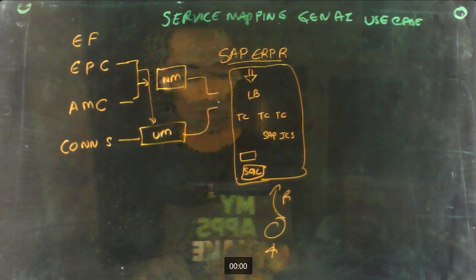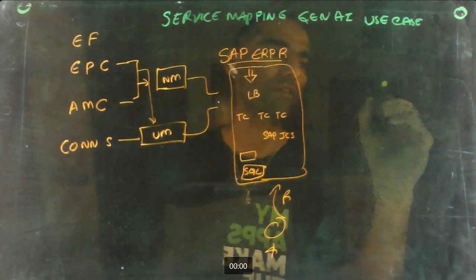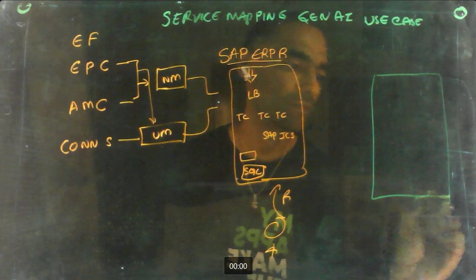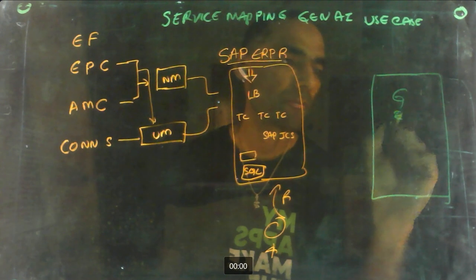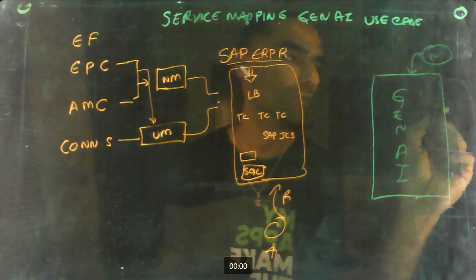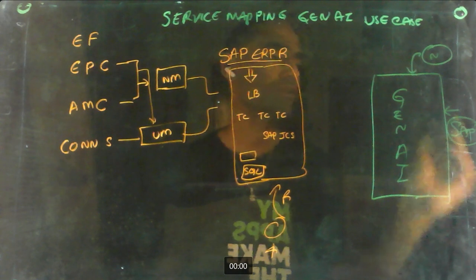Now what if there is a generative AI solution from ServiceNow? This is my generative AI solution. The input will come from ServiceNow, the input will come from SAP because SAP is a manufacturer of this and provider of this product.